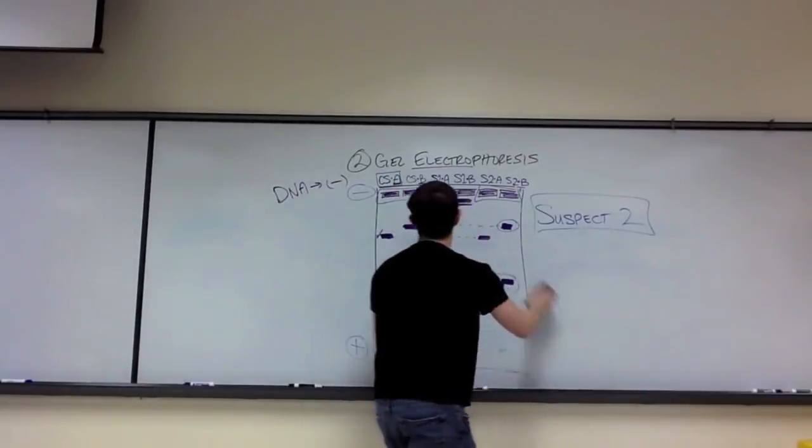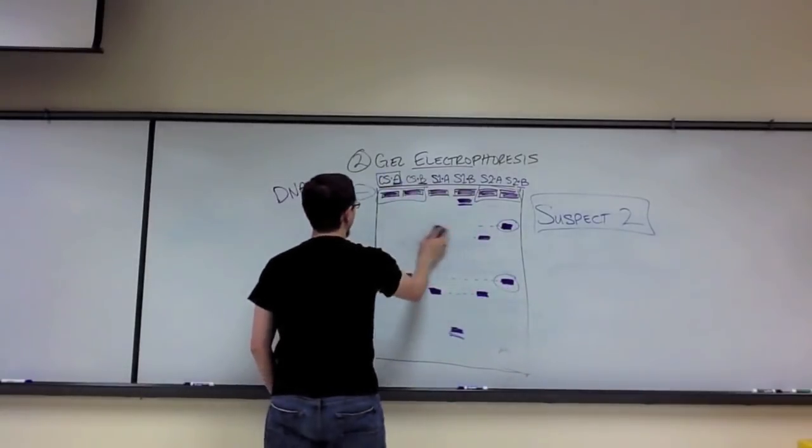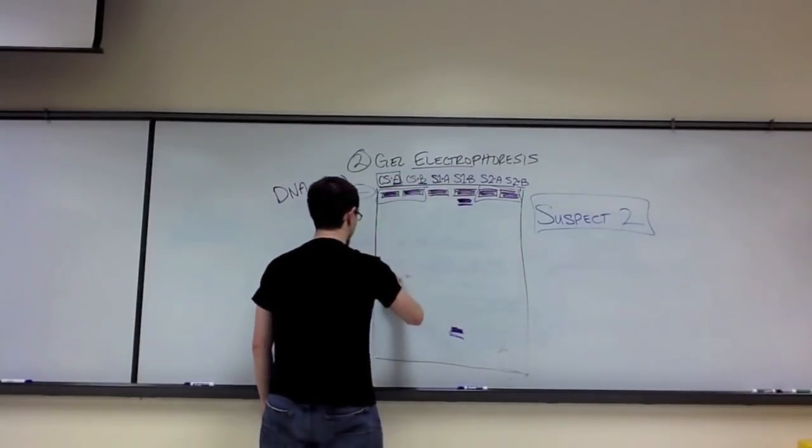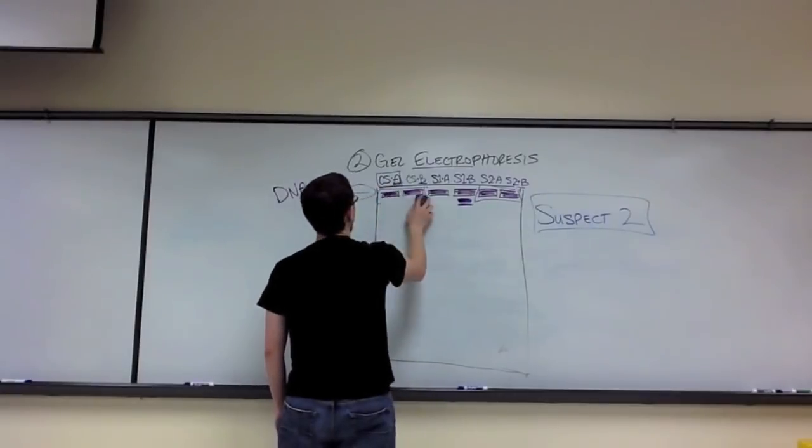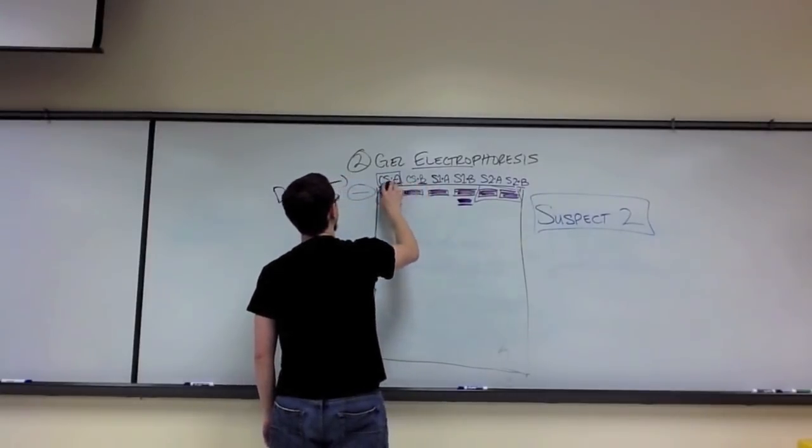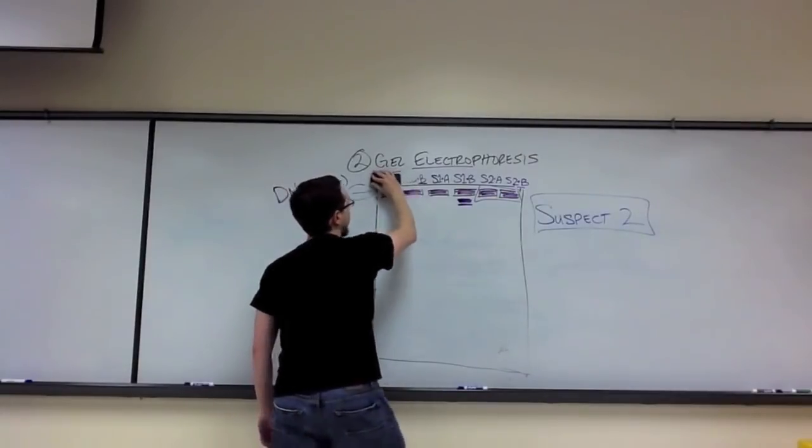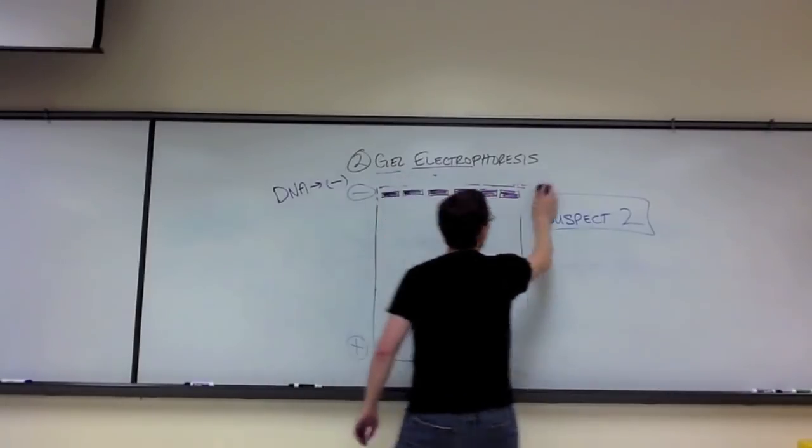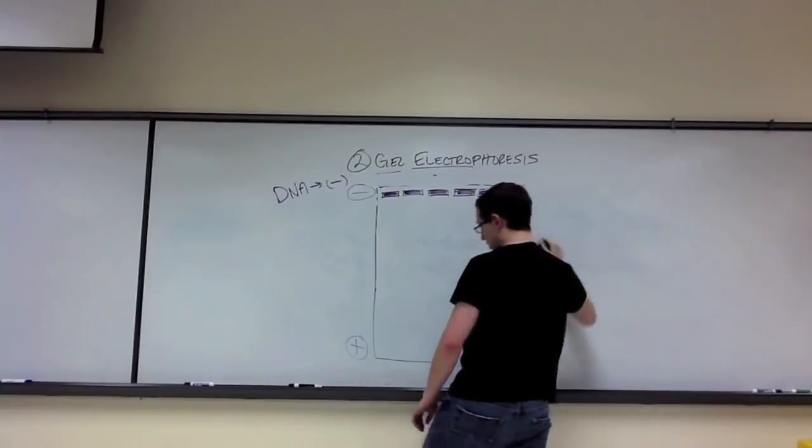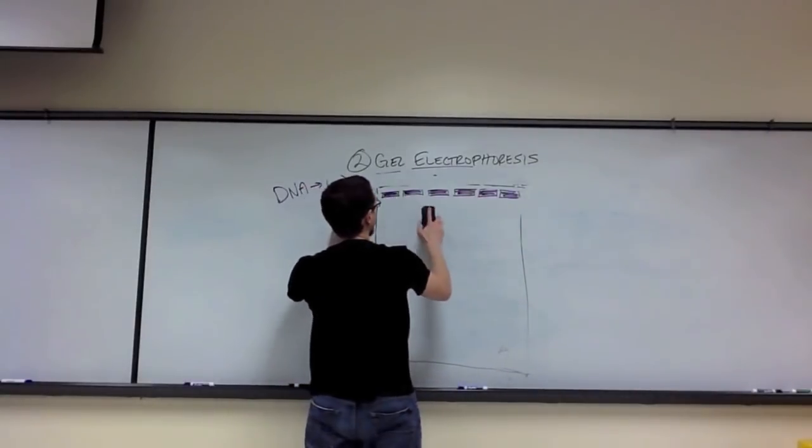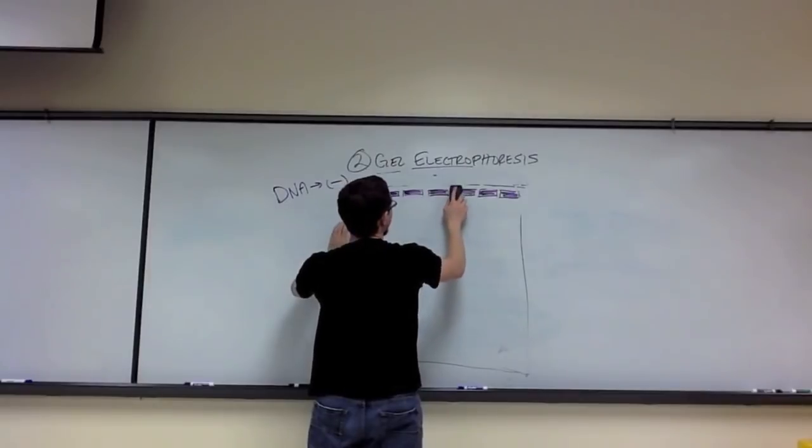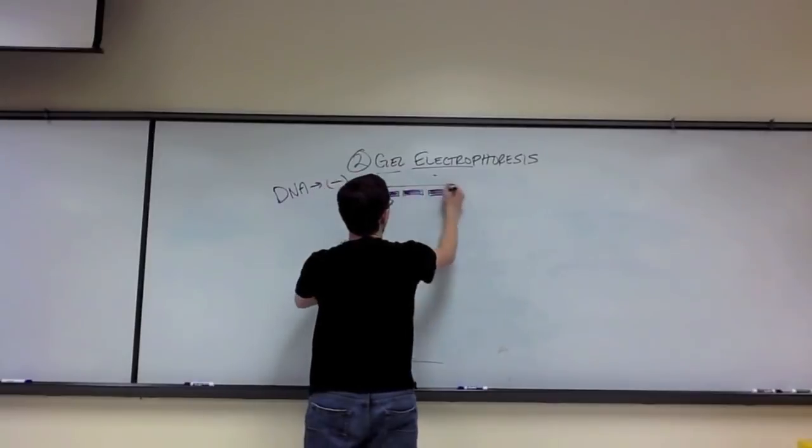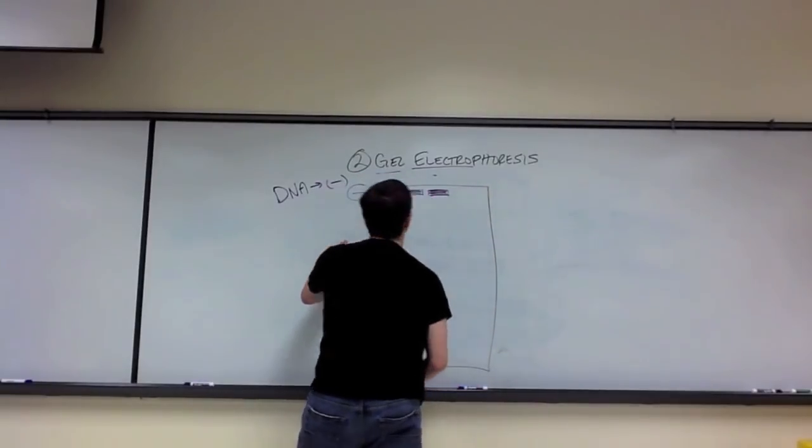So, the last thing I want to talk about is autoradiography in terms of paternity tests and gel electrophoresis in terms of paternity tests. What you're going to do when you have a paternity test is a little different from what you do when you have a crime scene. I'm going to erase everything about the crime scene and the bands. I'm actually going to change the number of lanes we have. I'm going to decrease it down to 4.